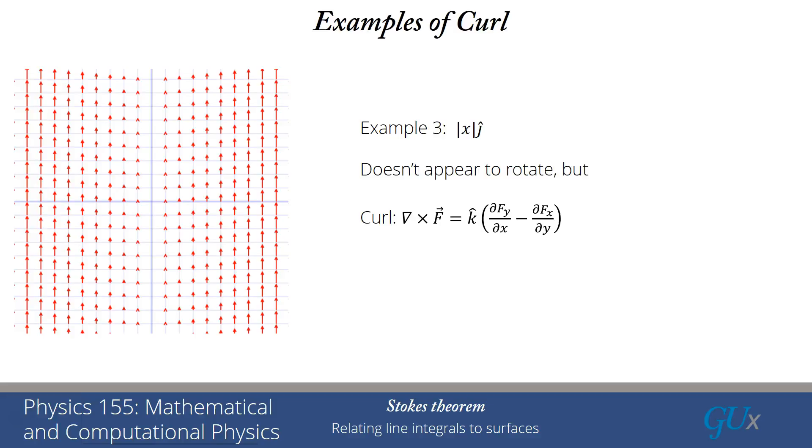However, when we evaluate the curl, what we see is fy is equal to absolute value of x. So d by dx of absolute value of x is equal to... I'm sorry, I think I have a minus sign error here. It's equal to the sign of x. And so this is equal to k hat times the sign of x. I apologize, there's a sign error in this expression. And so that's not 0. There is no fx, so the dfx dy is 0. So there's nothing to cancel this term. And so it has a non-zero curl.